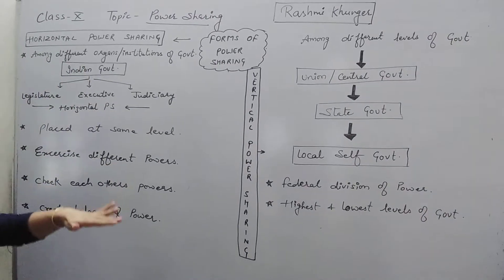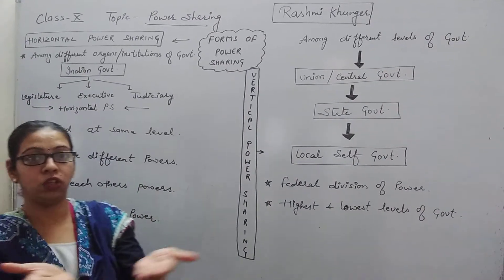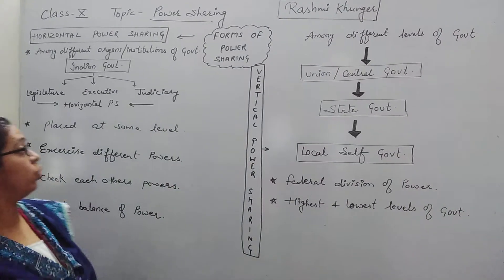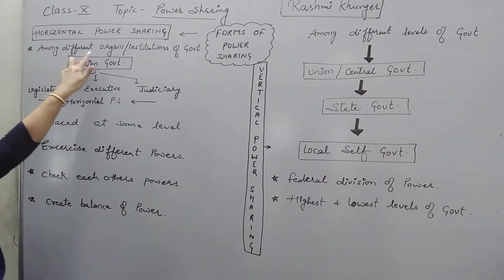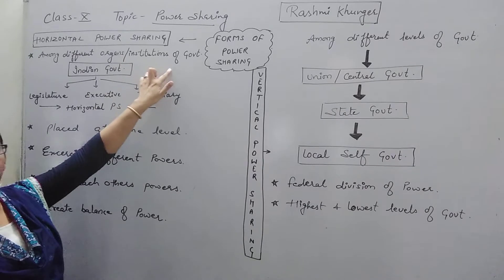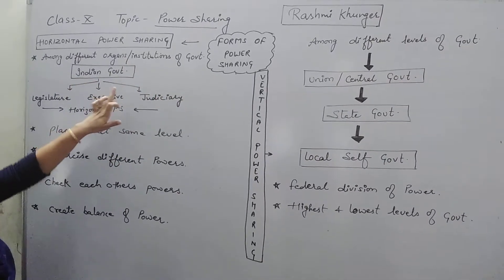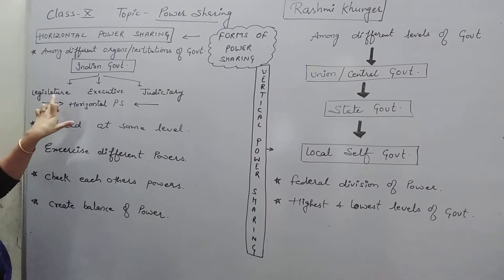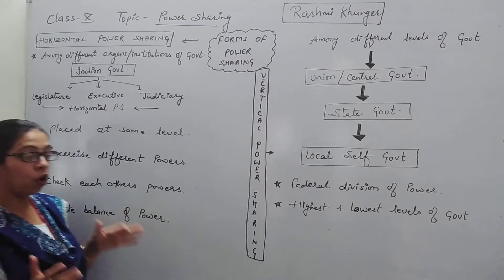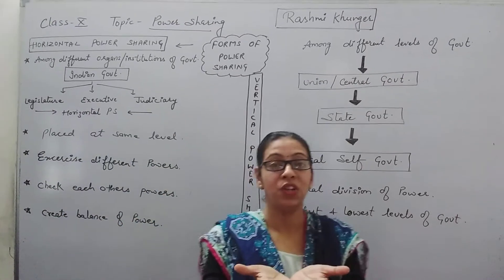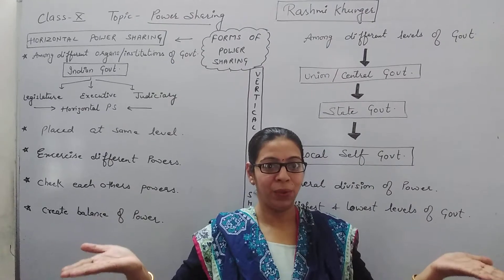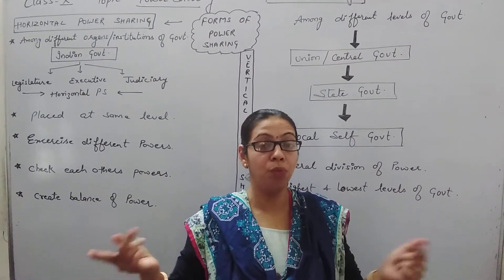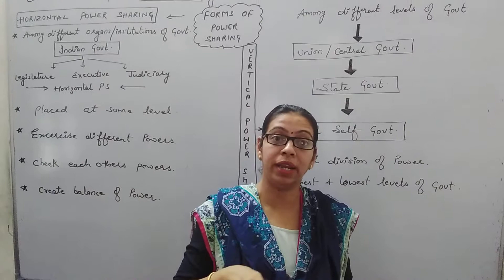Horizontal power sharing — in maths you have done horizontal, it is at the same level. It is among different organs and institutions of government, the Indian government. We have taken this example: Legislature, Executive, and Judiciary. All these three are at one level — no one can be considered more important than the others.